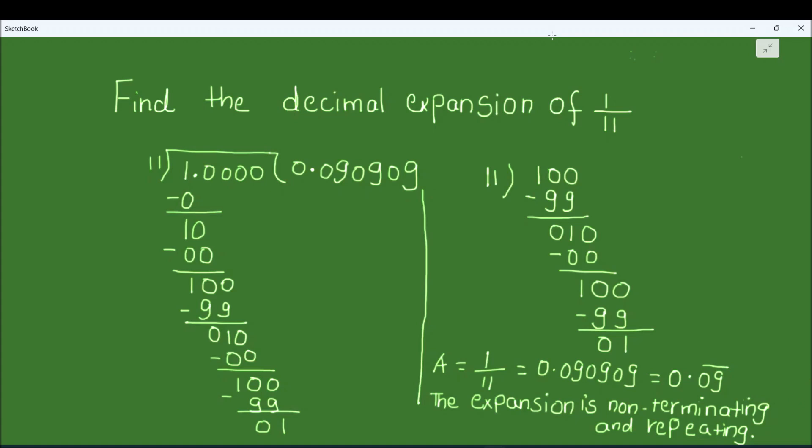This is how we find the decimal expansion of 1 by 11, and we can say it is a non-terminating and repeating expansion. I hope this video is helpful. If you like it, please hit the like button and subscribe to my channel for more math videos. Thanks for watching.